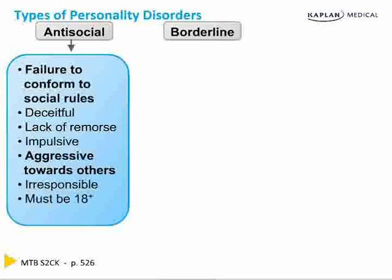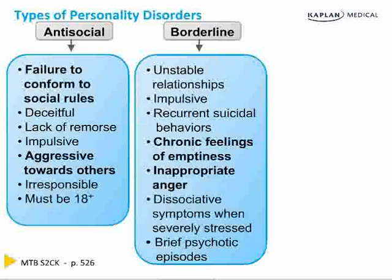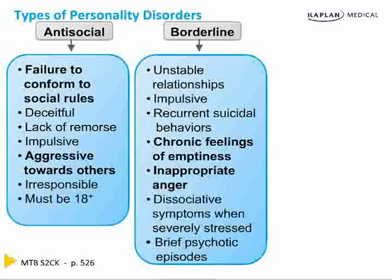Borderline personality disorder is a little less severe than antisocial — similar to how oppositional defiant disorder compares to conduct disorder. For borderline, these are people, men and women, in unstable relationships. They're impulsive, have recurrent suicidal behaviors, drug use and abuse is very common, and they have chronic feelings of emptiness and inappropriate anger. They'll throw temper tantrums easily, and they're dissociative when severely stressed. Brief psychotic episodes occur too — unstable relationships combined with brief psychotic episodes is very dangerous, and they may seek extreme revenge if they feel betrayed.